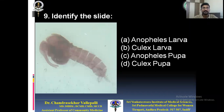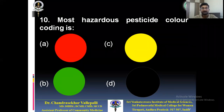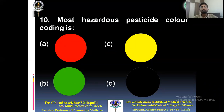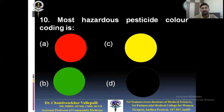Tenth question: most hazardous pesticide color coding — you can identify the color and pick the correct answer. Many are opting for red color. We will see which is the correct color coding for the most hazardous pesticide. I am asking for 'most hazardous' — you can compare and pick the most toxic option.